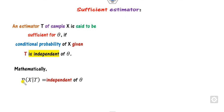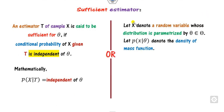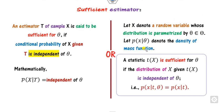That means whenever the conditional probability of X given T is independent of theta, you can say T is a sufficient estimator. You can also define it this way: if you have a random variable X with parameter theta — for example, if X is binomial then theta is n and p; if X is Poisson then the parameter is lambda — and p is the probability density function of X, then any statistic T is said to be sufficient for theta if the distribution of X given T is independent of theta.